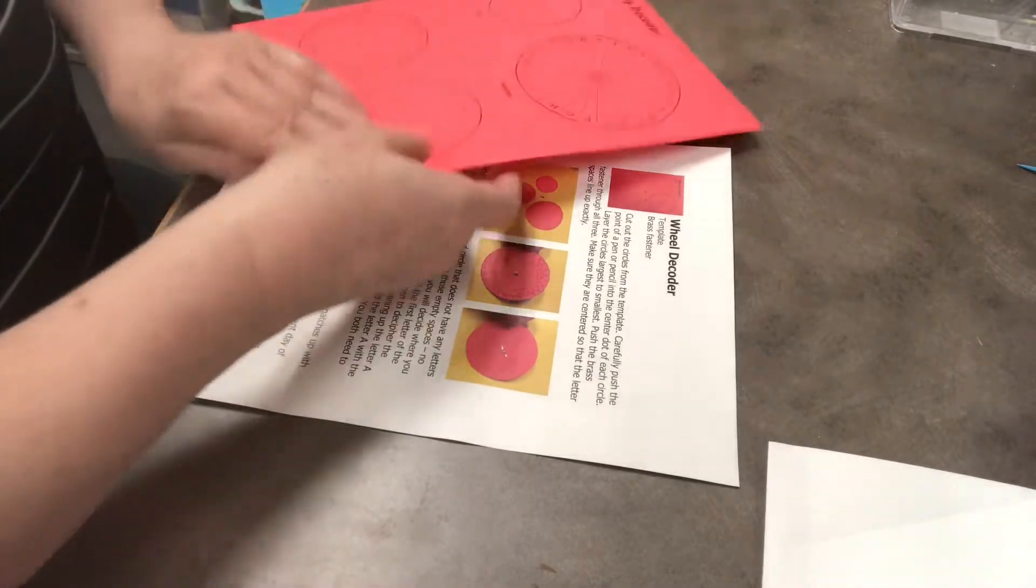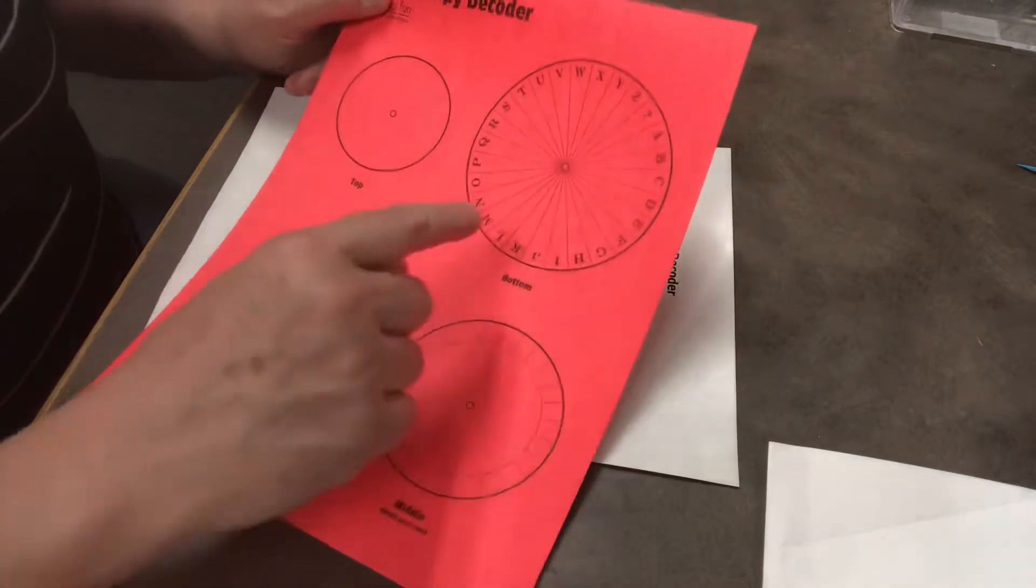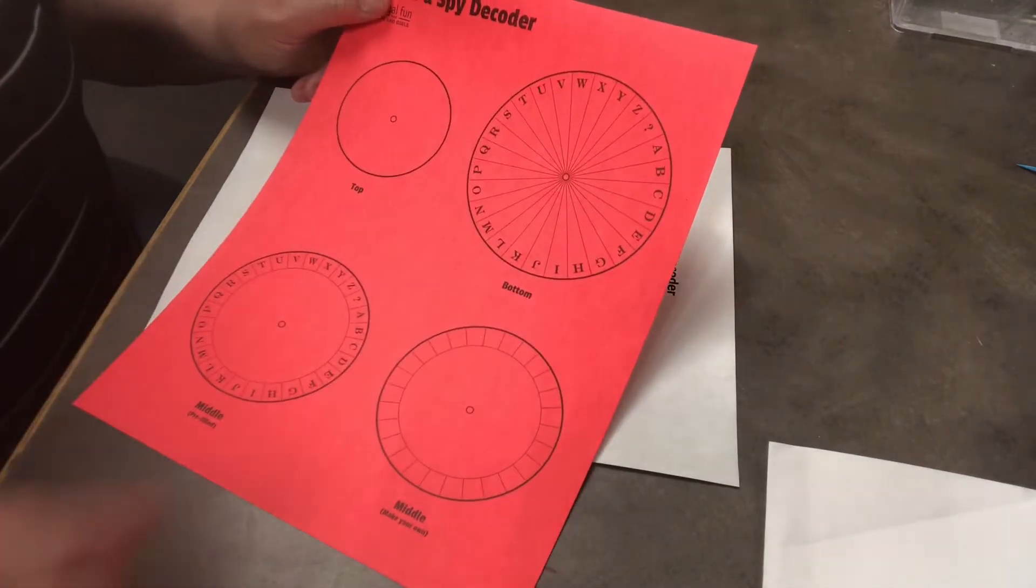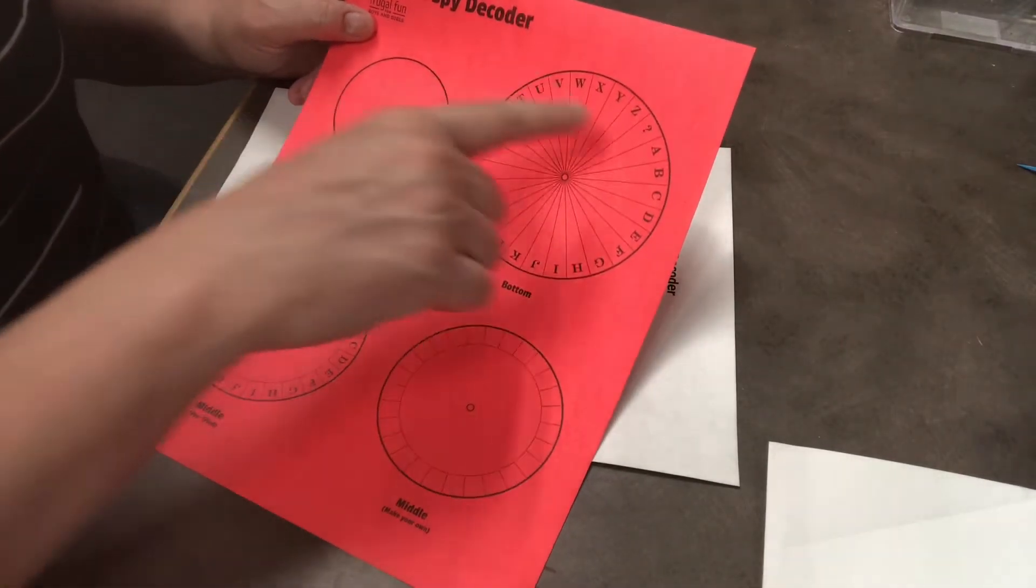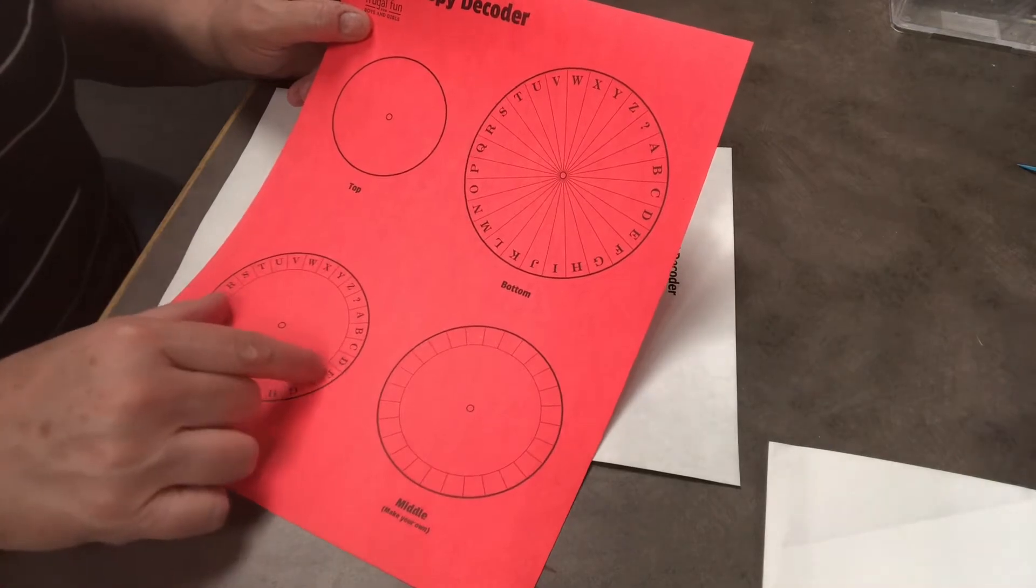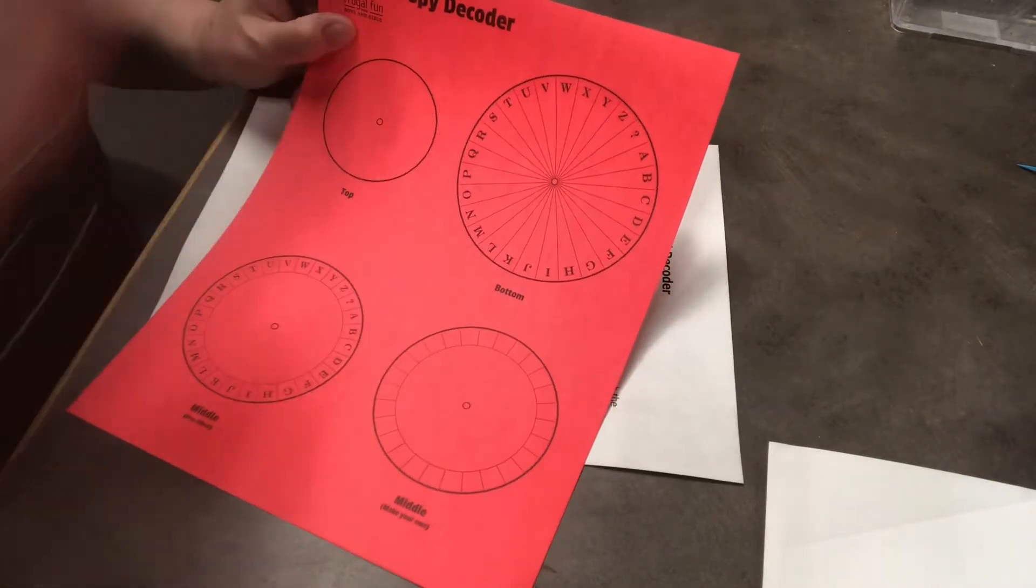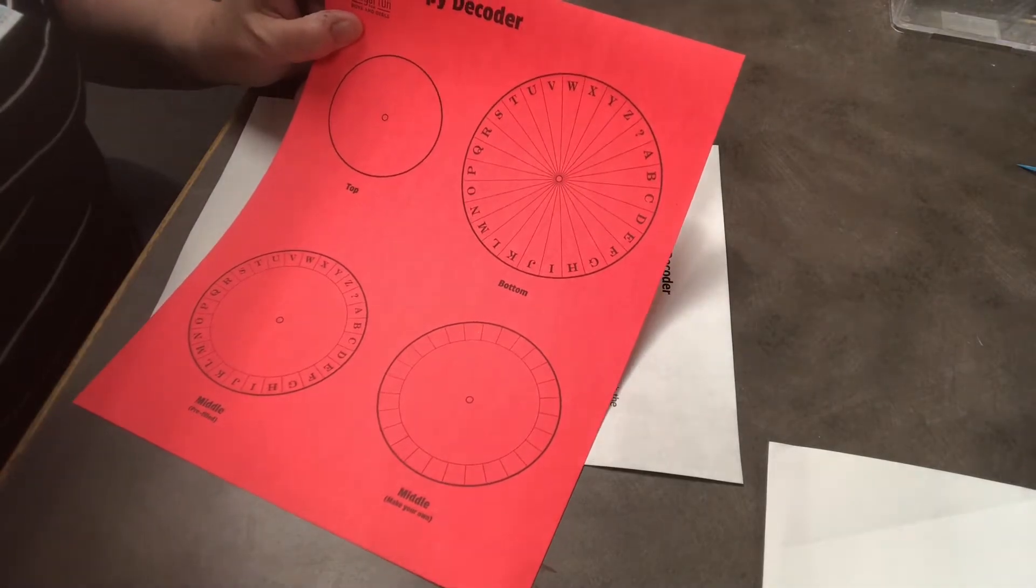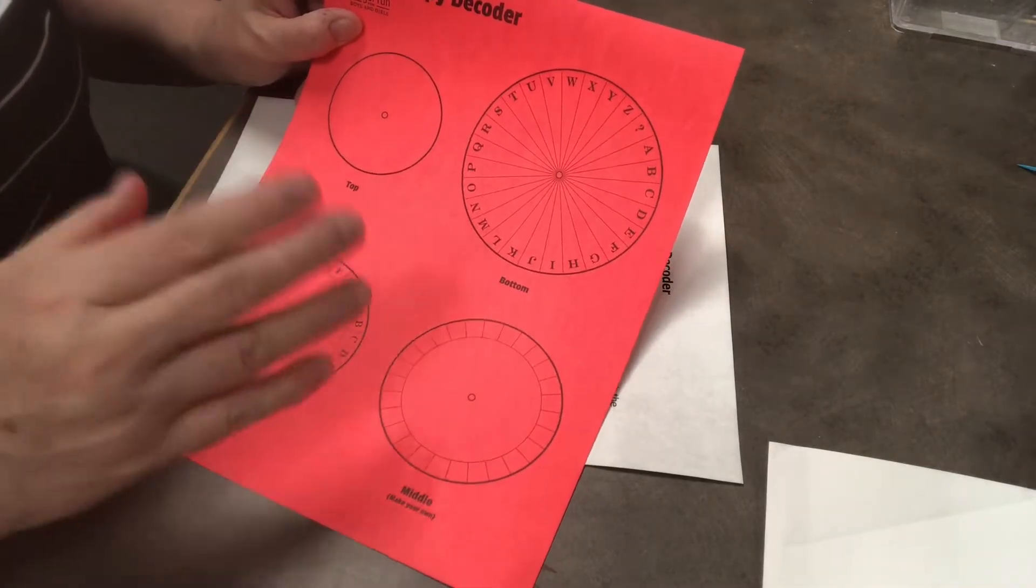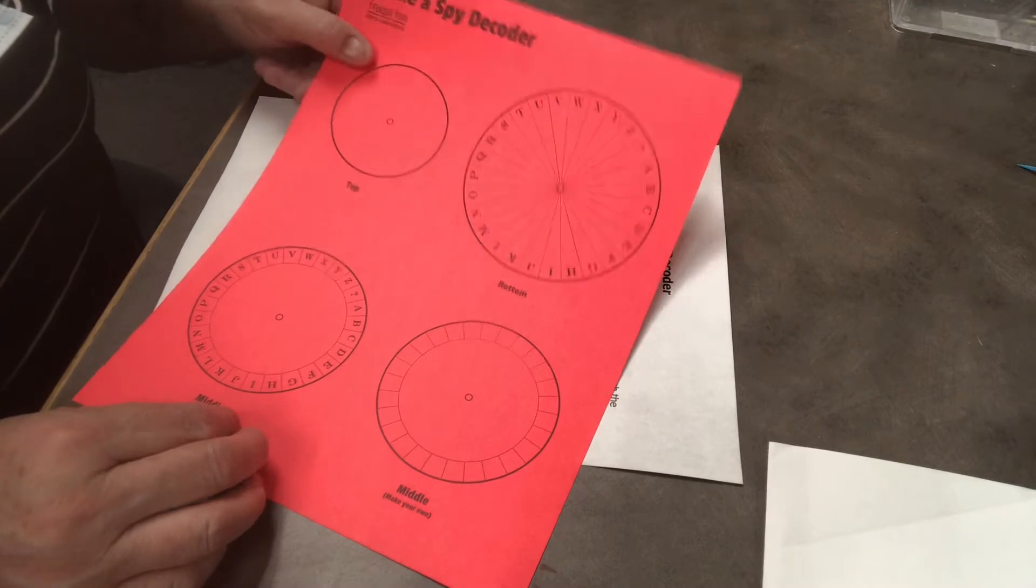So if you look at this template, there's the big wheel which is the bottom and the middle wheel. And it's the same thing. They're both the alphabet. This one's just a little bit smaller but they do line up. And then this is the top which is just plain in the middle. It's just a nice added secure measure to keep it all together.